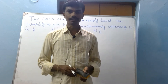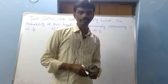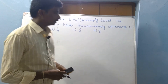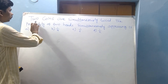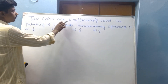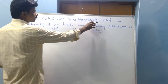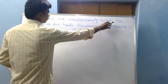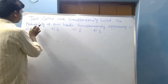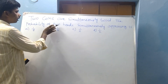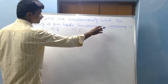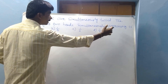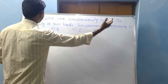Today our topic is probability. Two coins are simultaneously tossed. The probability of two heads simultaneously appearing is what?